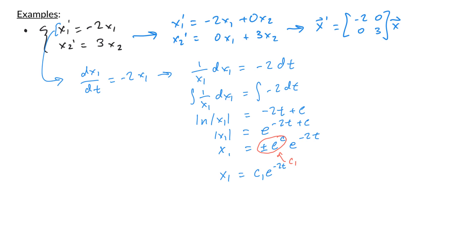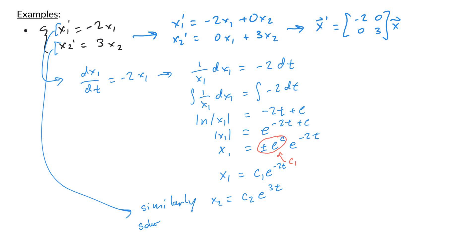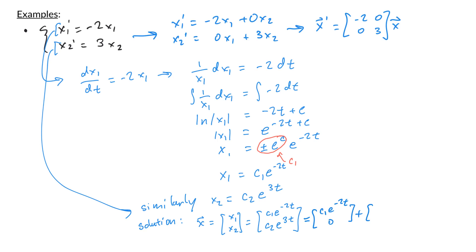We're not done — a solution requires both x1 and x2. Using the second equation the same way gives x2 = c2·e^(3t). So the solution is the vector x = [c1·e^(-2t), c2·e^(3t)], which can be written as c1·[1, 0]·e^(-2t) + c2·[0, 1]·e^(3t).